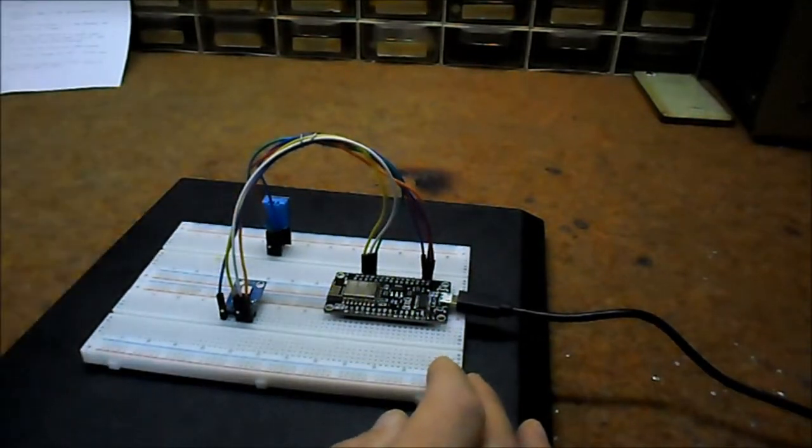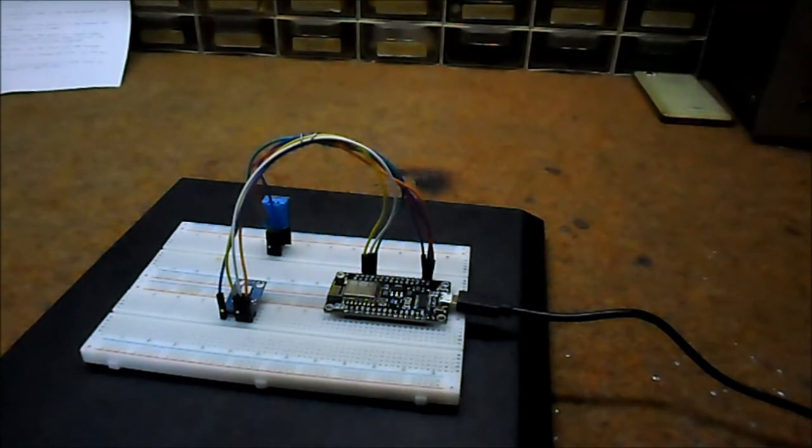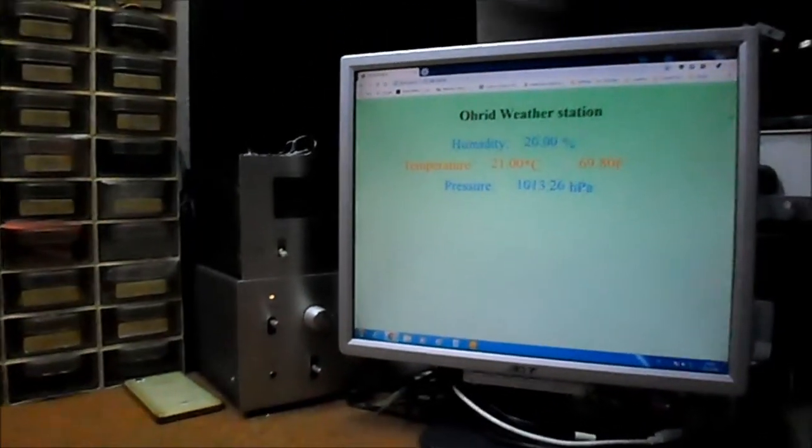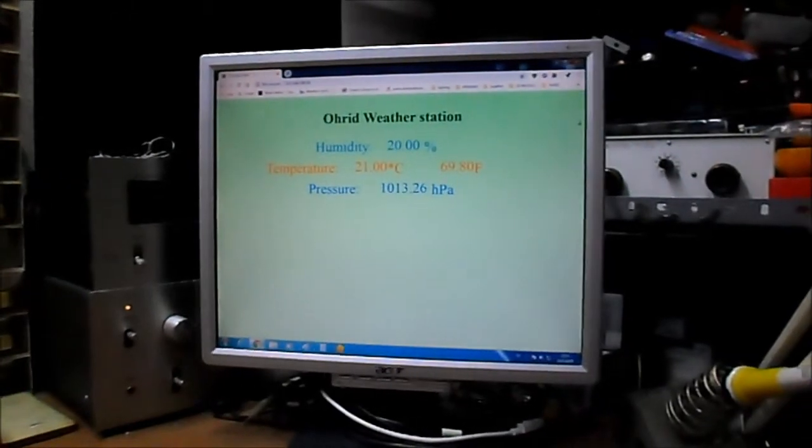After uploading the code, in the serial monitor you will see the IP address. Next, just copy this IP address and paste it in the web browser and you will see a web page on your computer.